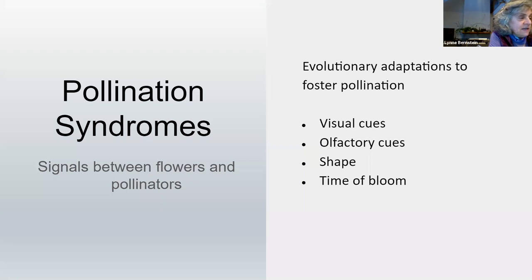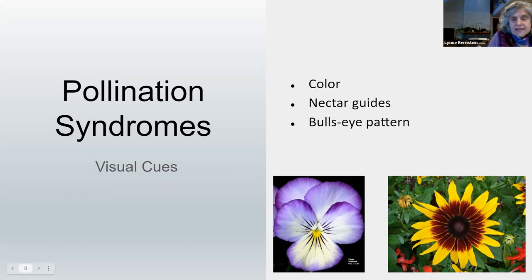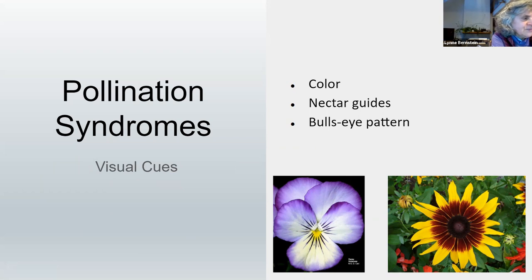An additional adaptation is the correspondence between the plant's bloom time and the insect's feeding time — a phenological synchrony. Visual cues of pollination syndromes include color, nectar guides, and a bullseye pattern made by the coloration of the petals that draws the pollinators straight to where the food is. Generally, pollination syndromes produce mutually beneficial interactions by facilitating the insect's search for food and the transfer of pollen from one flower to the other.